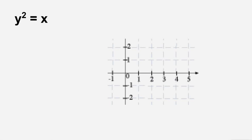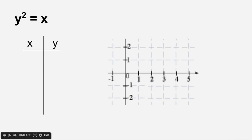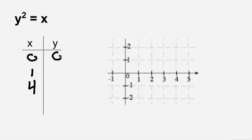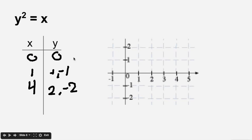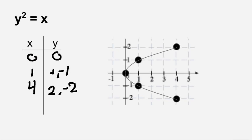Now let's look at the equation y squared equals x and graph it. We make a t-chart and plug in values for x: 0, 1, and 4. If you plug in 0, you get y equals 0. If you plug in 1, you get y equals 1 but also y equals negative 1. If you plug in 4, you get y equals 2 and y equals negative 2. So for each value of x, you're getting two values of y. When we graph it — the point at (0,0), the two points at x equals 1, and the two points at x equals 4 — drawing the line shows a shape that is not a function.